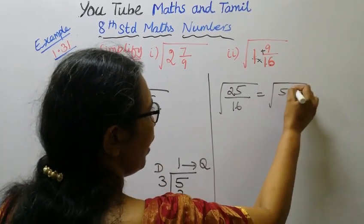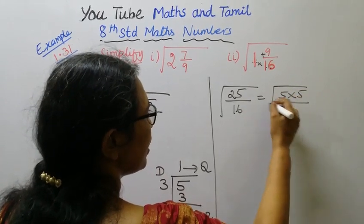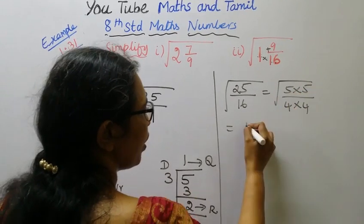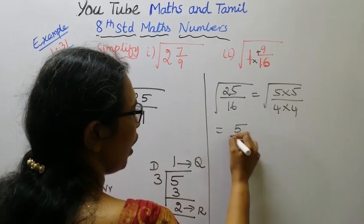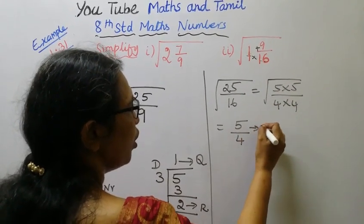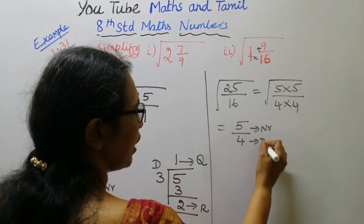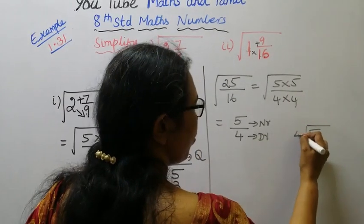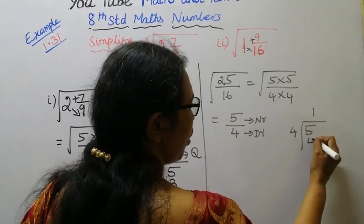5 into 5 is 25, 4 into 4 is 16. Square root: 5 by 4. This is numerator, this is denominator.